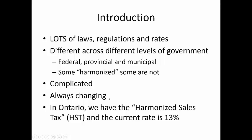In Ontario, we have a harmonized sales tax, which simply means that the collection of sales tax is coordinated through the federal government. The HST is a combination of provincial tax and federal tax — harmonized just means that the federal and provincial governments are working together to collect one tax instead of two. Our current rate of 13% is a combination of 8% provincial tax and 5% federal tax.